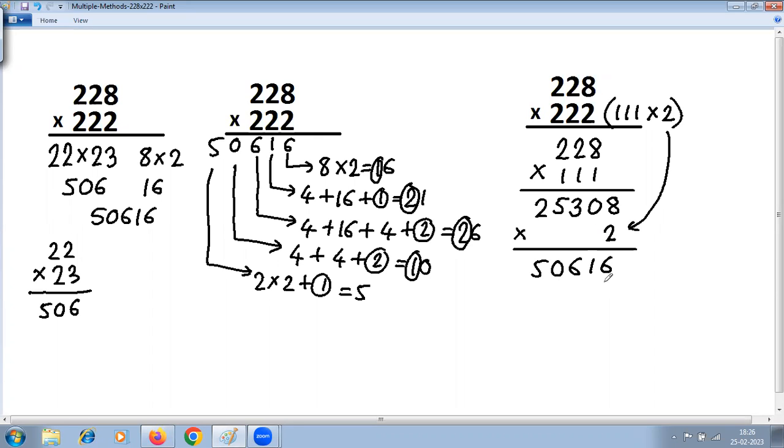So you have solved one problem, that is 228 multiplied by 222, in three different methods. The first one is the multiplication special case, second is vertically crosswise, which is also called crisscross multiplication, and the third we are making use of multiplication by series of 1. Thank you.